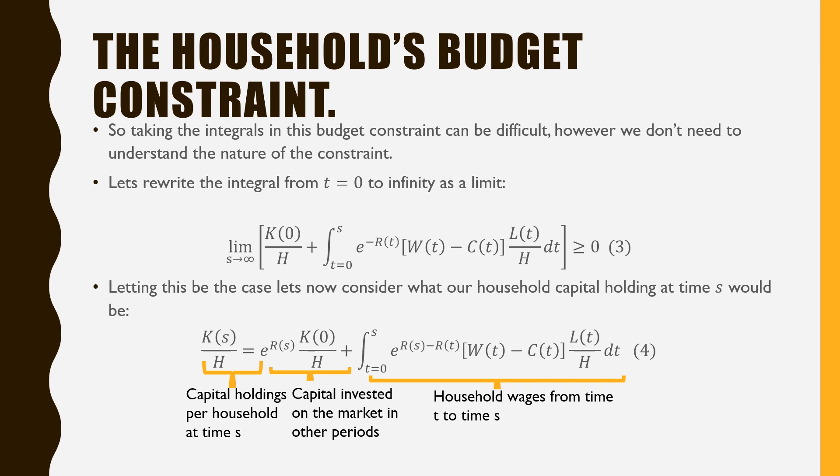Letting this be the case, let us now consider what our household's capital holdings at time s would be. The capital holdings at time s equals e^(R(s)), which is our market return at time s, times our initial capital holdings, plus the household wages from time t to time s.